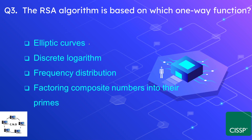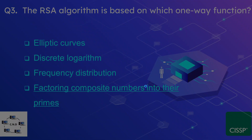Question number three: the RSA algorithm is based on which one-way function? The options are elliptic curves, discrete algorithm, frequency distribution, and factoring composite numbers into their primes. The correct answer is factoring composite numbers into their primes. RSA is based on the difficulty of factoring large composite numbers into their primes, which is a very difficult mathematical problem.